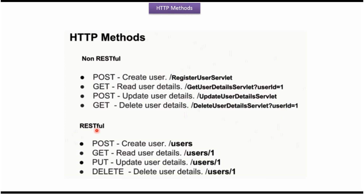Now we will see in case of RESTful what kind of HTTP methods we have to use for different operations. In case of creating the user we have to use POST method, and in the body of the request we have to send the JSON payload which contains user information like user name, email, age etc., and the URI is users, which is the collection name. To read user details we have to use GET method, and here you can see the URI: users collection, then in the path parameter we have to specify the user ID which we want to retrieve.